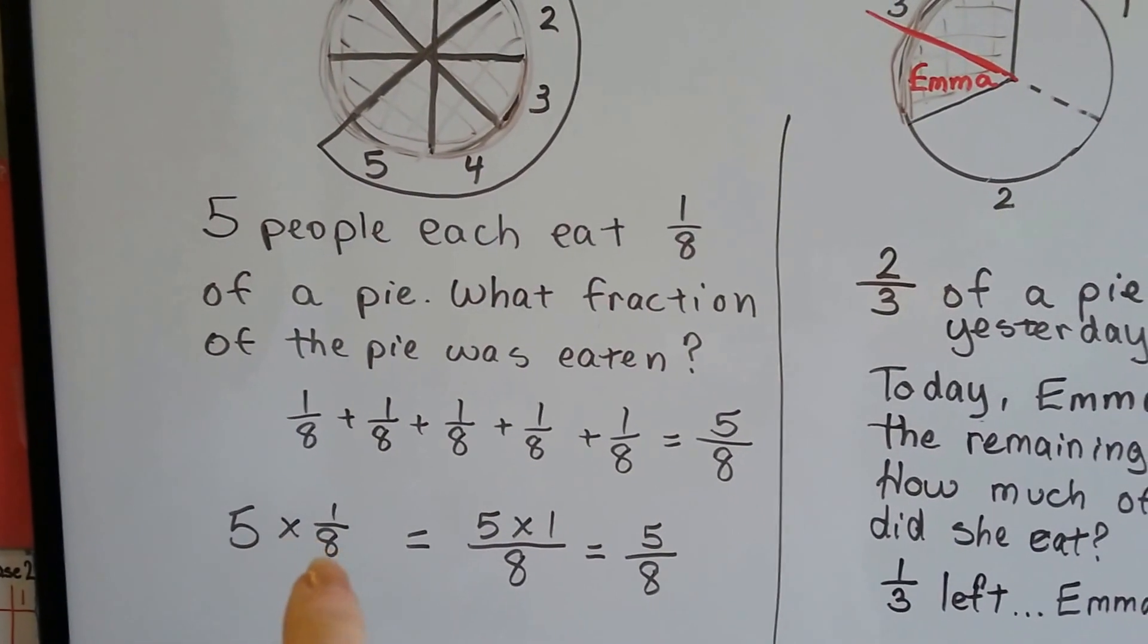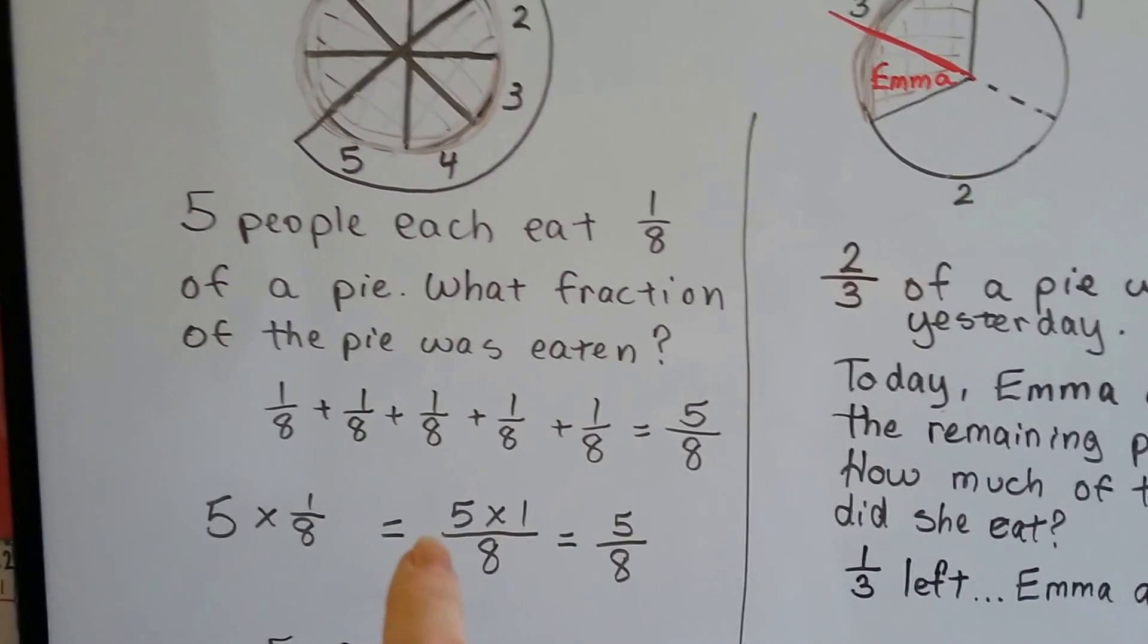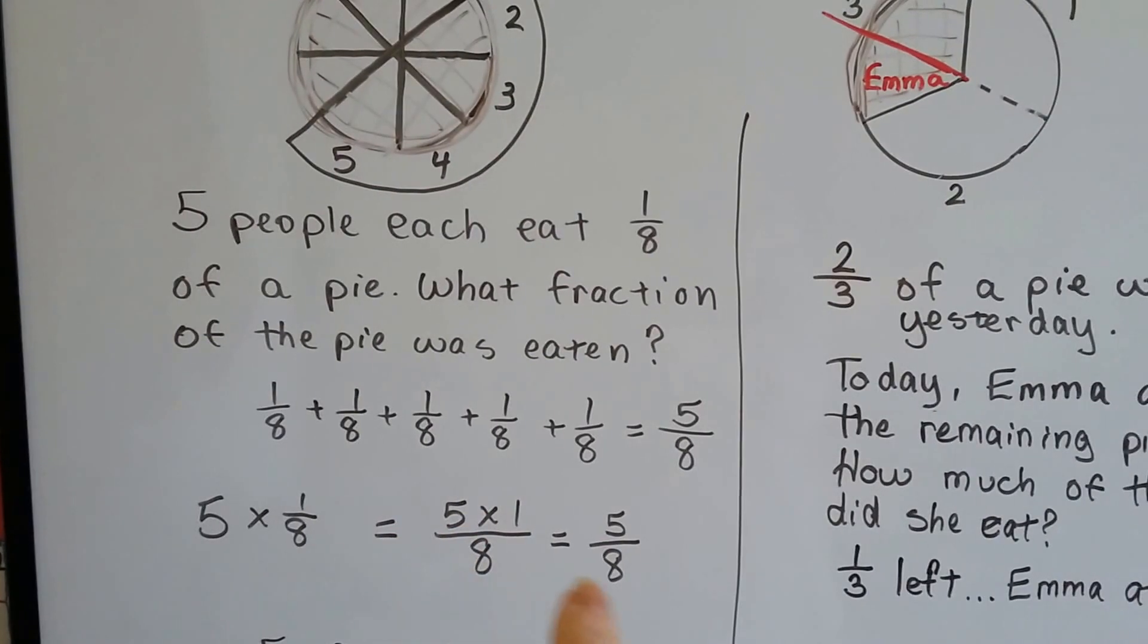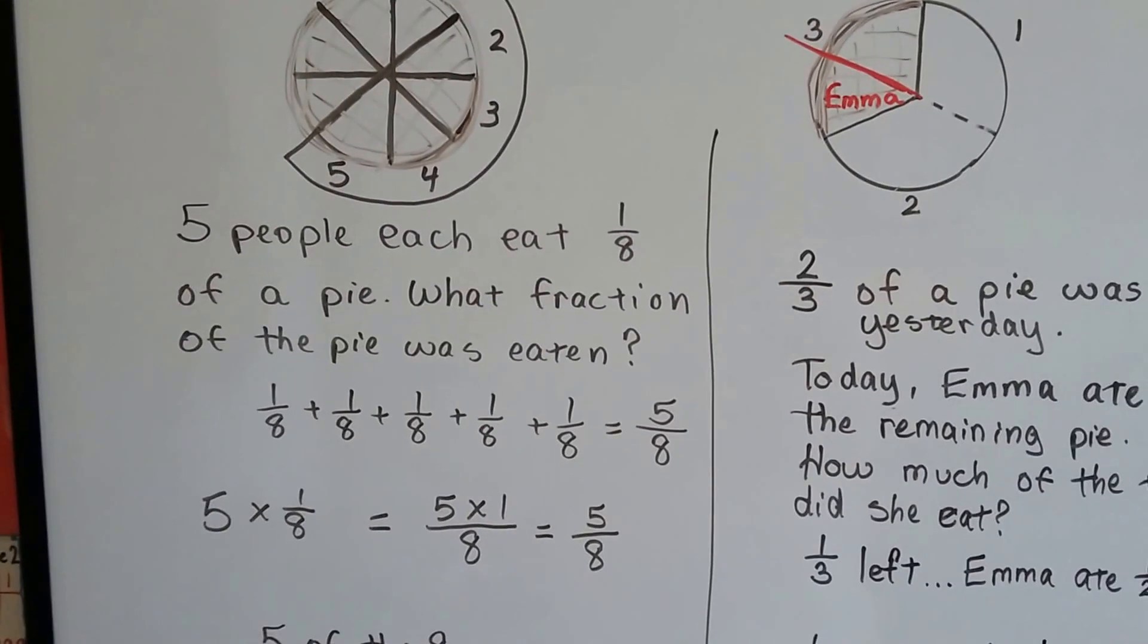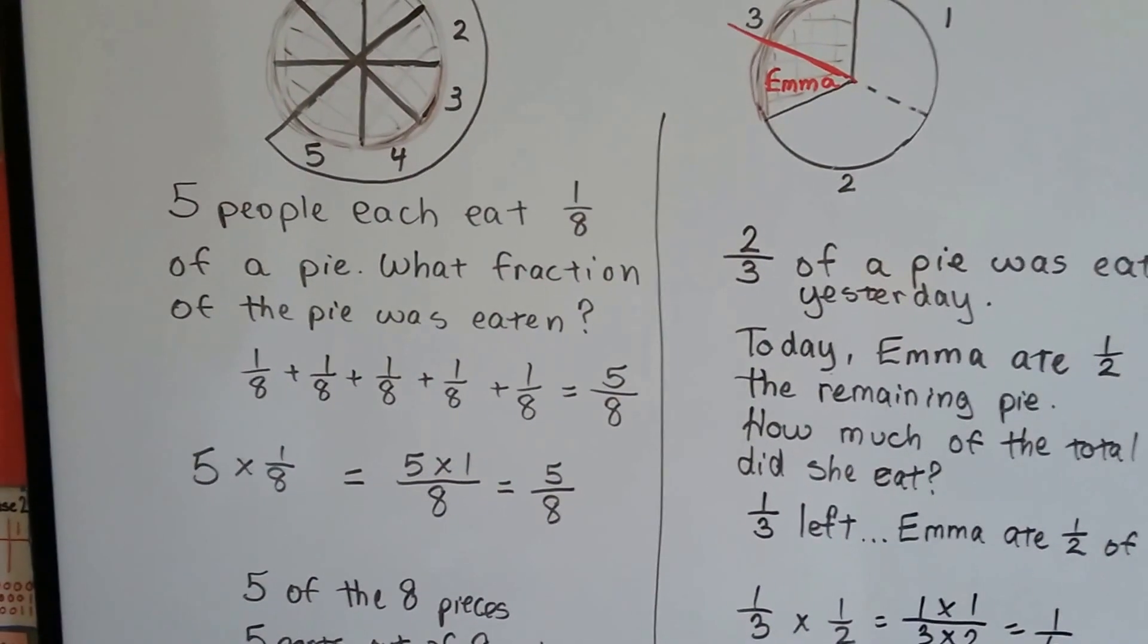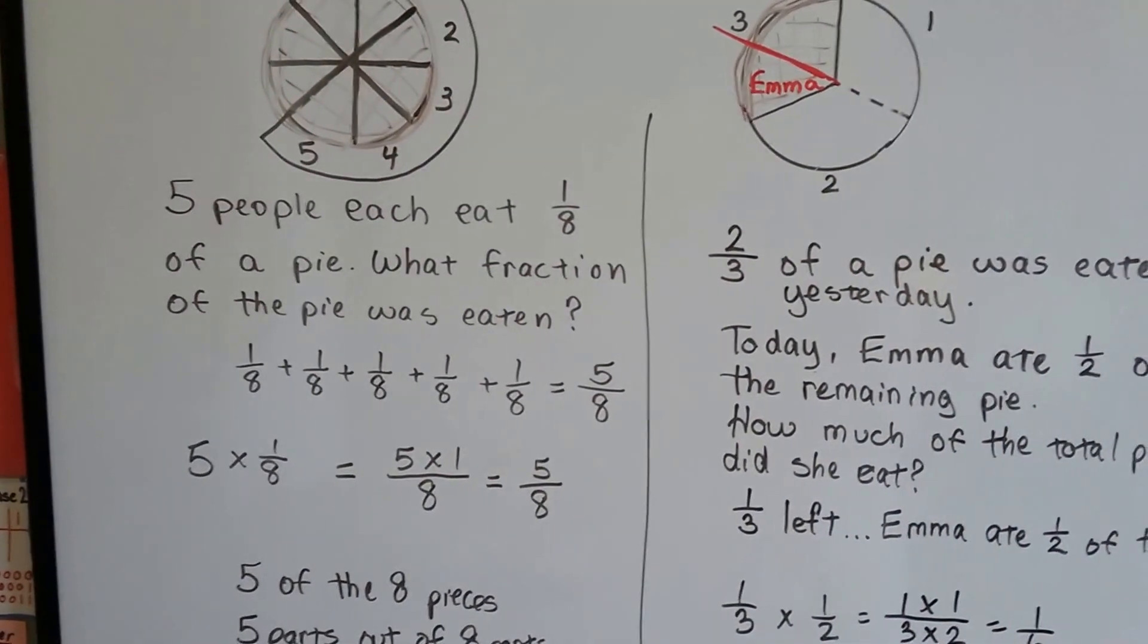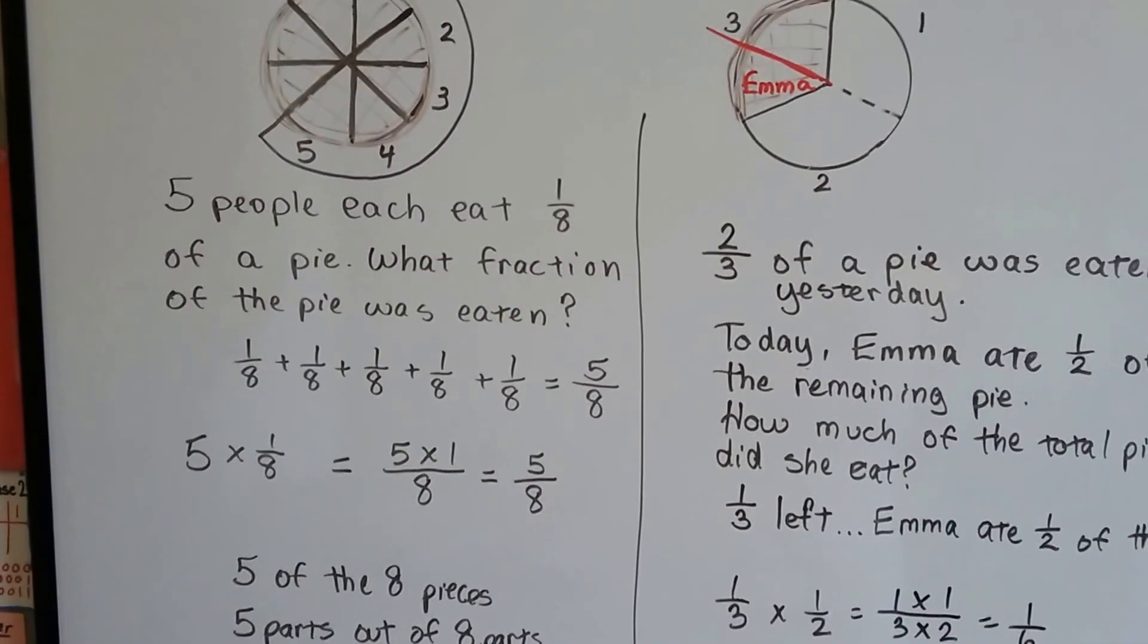When we do a whole number times a fraction, we throw it up on top of the numerator, multiply it, and slide the denominator over. It's 5 times the 1/8. 5 of the 8 pieces were eaten. 5 parts out of the 8 parts were eaten.